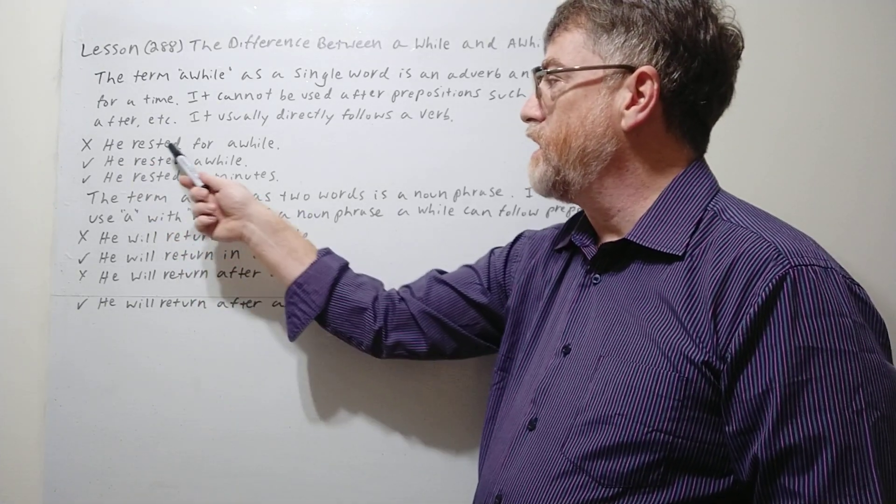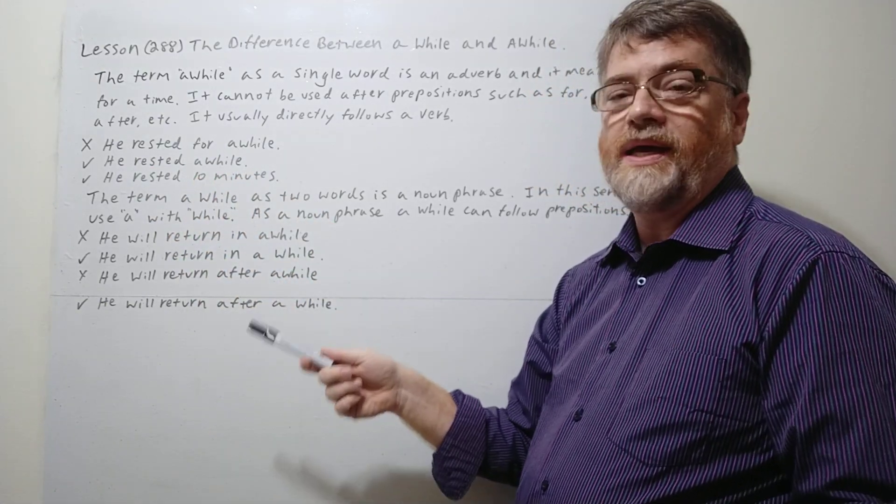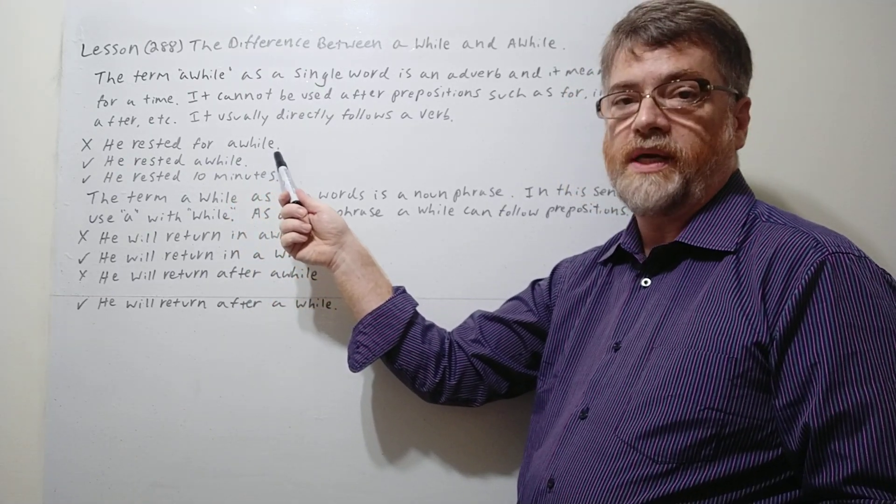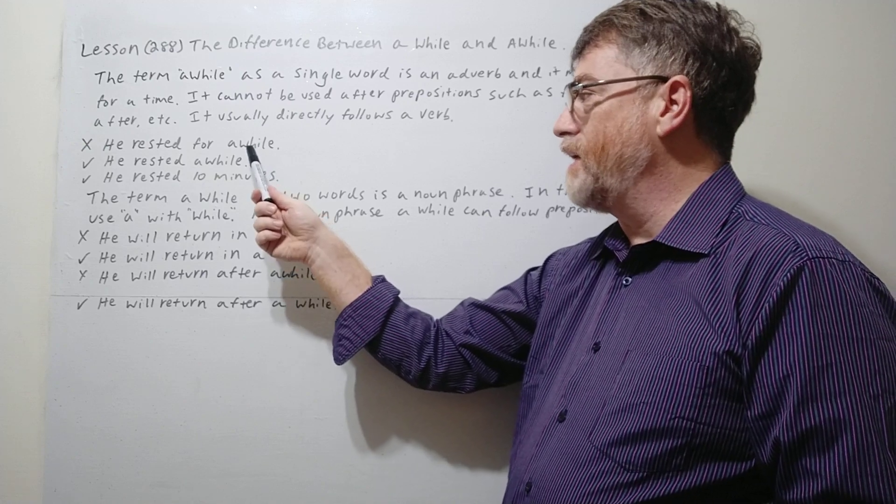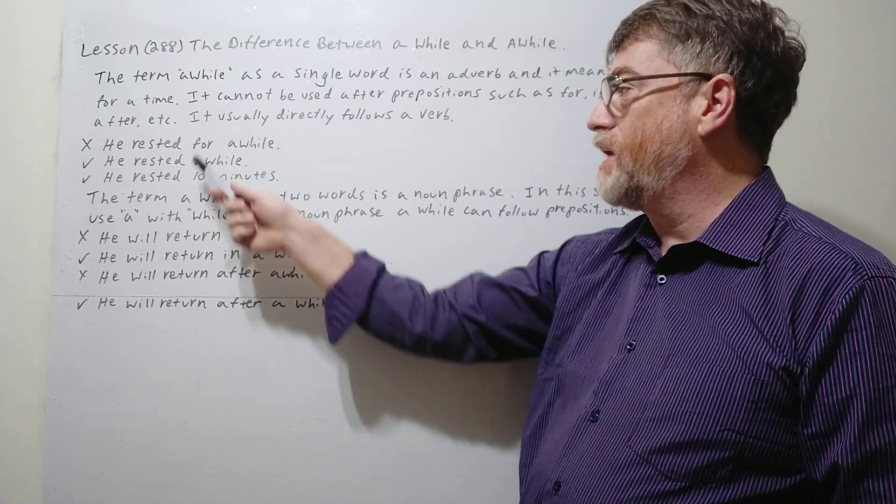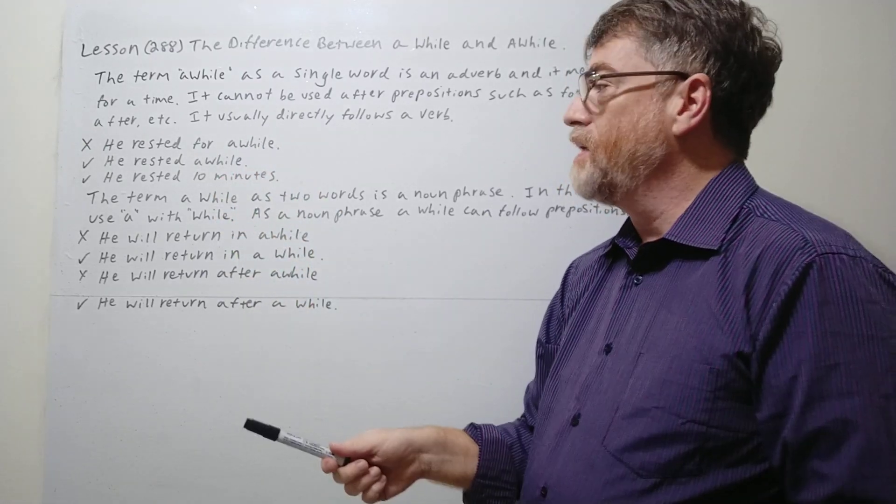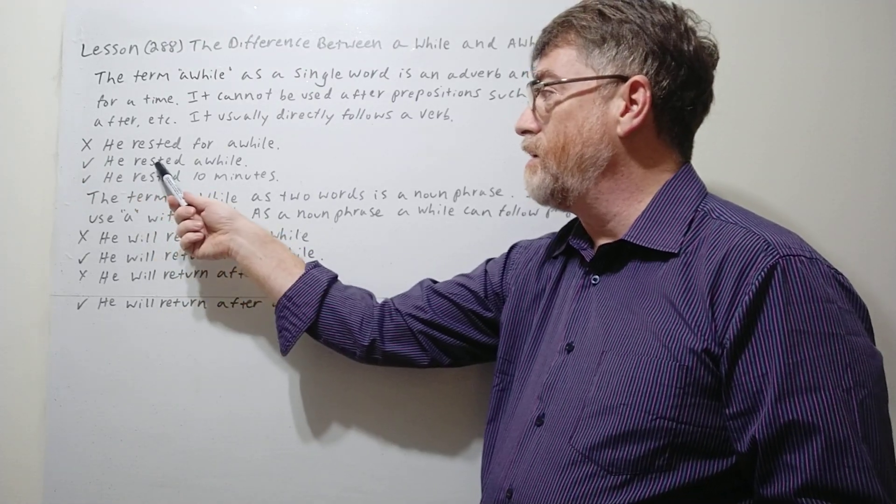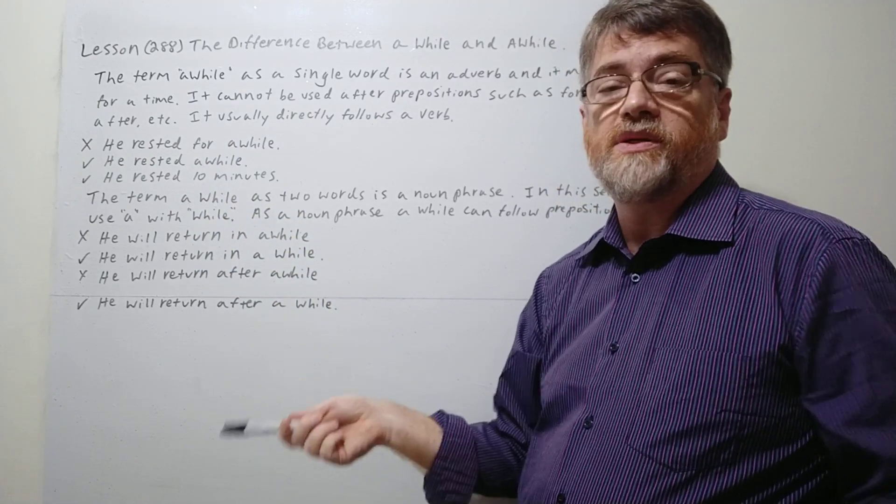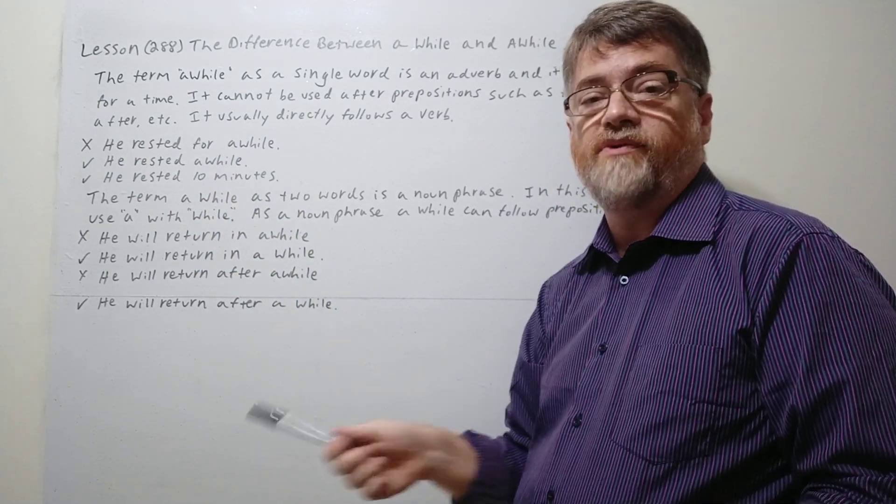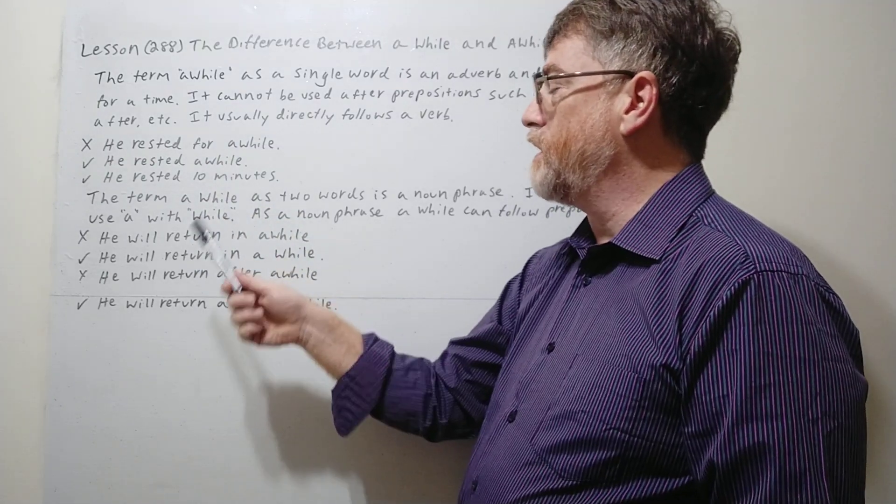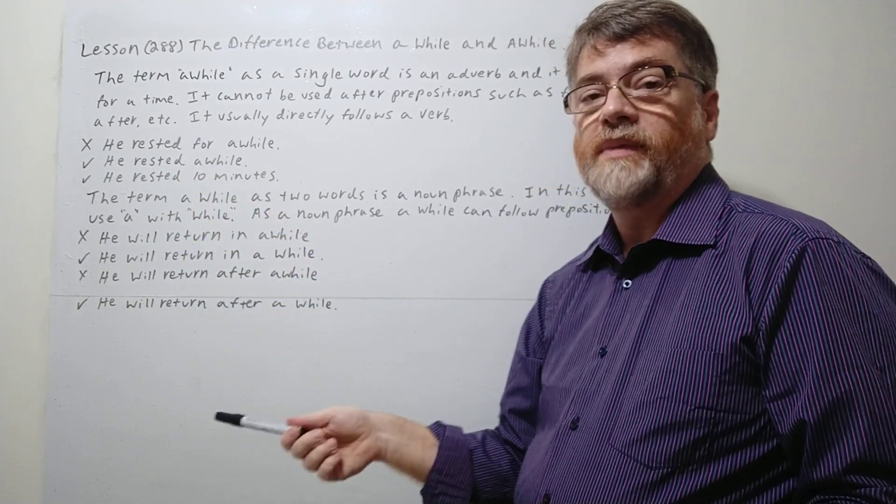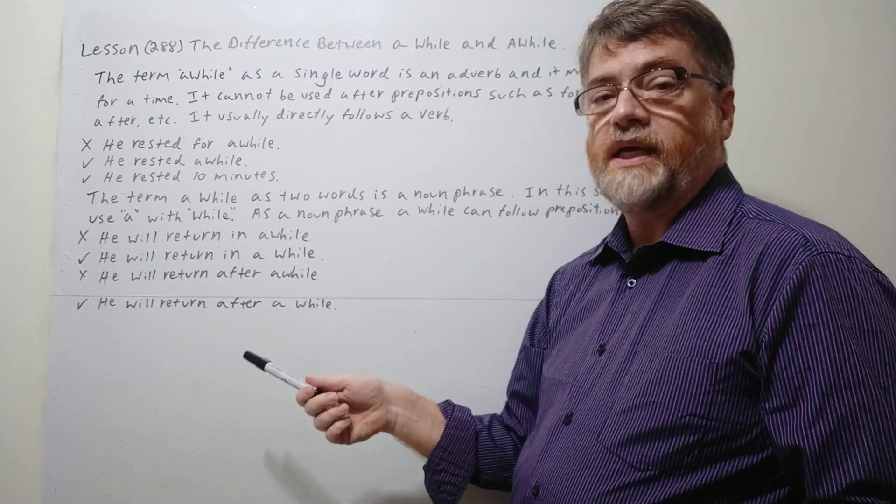So let's look at some of the examples here. He rested for a while. Here this would be wrong to use awhile as a single word because as a single word it's a preposition, so it cannot follow for. So this would be correct: He rested awhile. Just that's it. Just awhile. No for, no in, no after, none of that. It's an adverb. It directly modifies the verb.